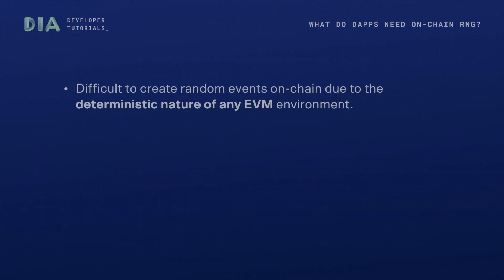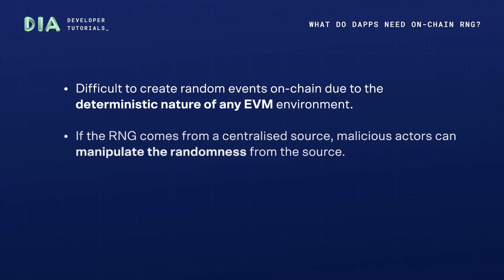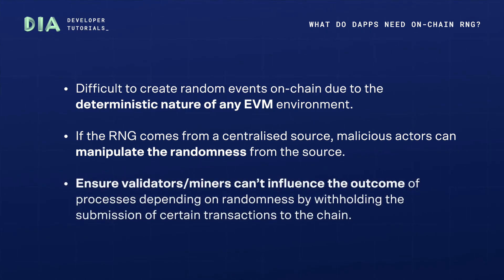Providing a source of randomness on-chain is a difficult task due to two main aspects. On one hand, it is very difficult to create random events on-chain due to the deterministic nature of any EVM environment. On the other hand, if the random number generation comes from a centralized source, malicious actors can manipulate the randomness from the source and provoke irreversible damage to the protocols and users. Also, it needs to be ensured that validators or miners can't influence the outcome of processes depending on randomness by withholding the submission of certain transactions to the chain.